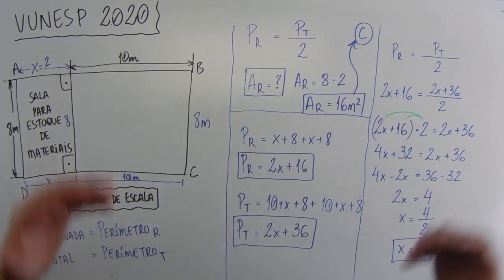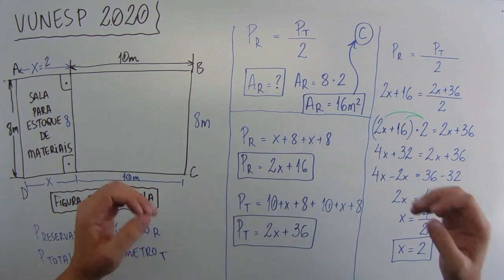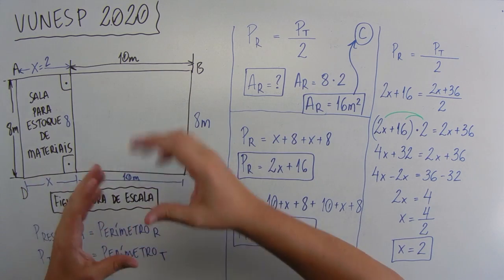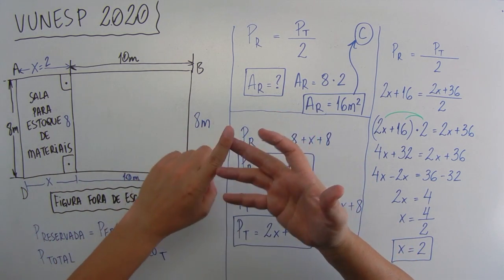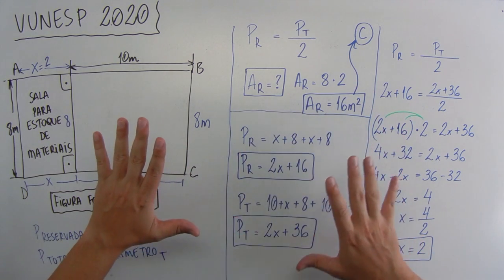Espero que você tenha entendido essa questão. Primeiro de tudo, você entendeu o enunciado, o que ele está relacionando à figura. Depois você separou, lembrando dos conceitos de perímetro e área, e depois fez as continhas aqui, e não se perdeu nas passagens.